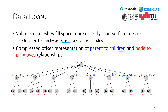The blue numbers indicate parent-to-children relationships, while the red numbers indicate node-to-primitive relationships. Blue numbers are only required for internal tree nodes. For instance, the root node has children 1 to 8, so its offsets are 0 to 8. And the root node spans all 30 primitives, thus its offsets are 0 to 30.